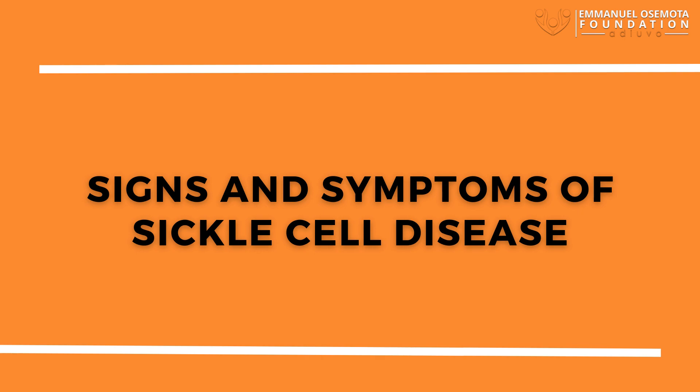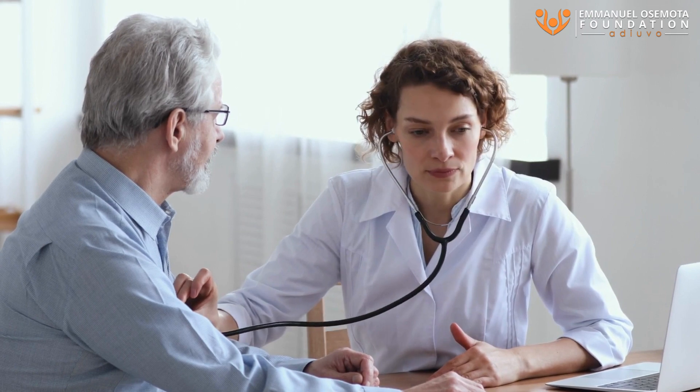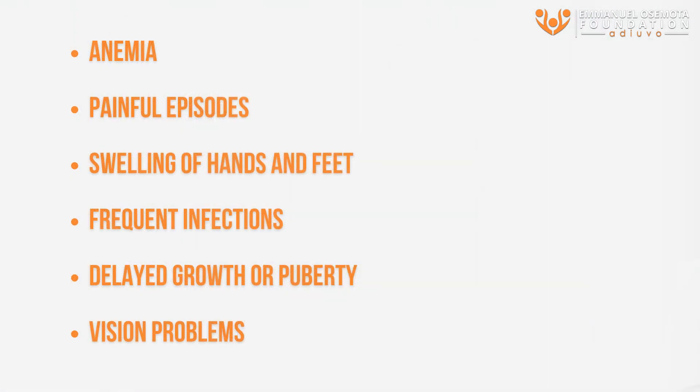Signs and Symptoms of Sickle Cell Disease. The symptoms of sickle cell disease usually begin to surface around the age of six months. These symptoms, varying in intensity and frequency, can change over time. They can include anemia, painful episodes, swelling of hands and feet, frequent infections, delayed growth or puberty, and vision problems.